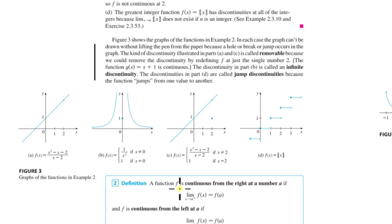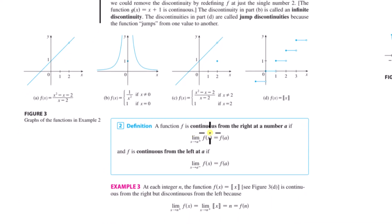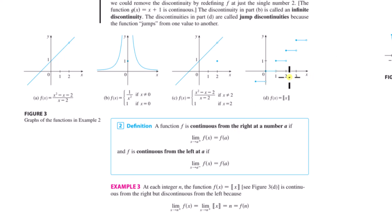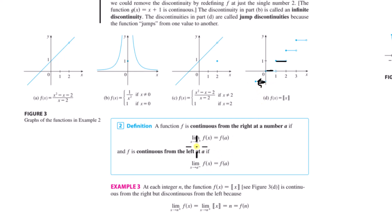You can talk about the idea of a function being continuous from the left or the right. Here the function isn't continuous overall, but it is continuous from the right. That's defined using one-sided limits.